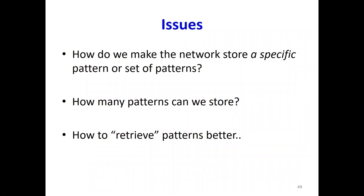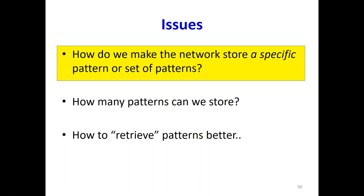Here's the story so far. A Hopfield network is a loopy binary network with symmetric connections, and neurons try to align themselves to the local field caused by other neurons. Given an initial configuration, the pattern of neurons will evolve until the energy achieves a local minimum. As a result, the network acts as a content addressable memory — if you initialize the network with a somewhat damaged version of a local minimum pattern, it will evolve into that pattern, effectively recalling the correct pattern from a damaged or incomplete version.